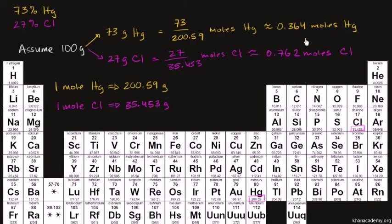So what's going to be the ratio of mercury to chlorine? Or I guess we could say since there's more chlorine, chlorine to mercury. Remember, this is just a number. When I say 0.762 moles, this is just 0.762 times Avogadro's number of chlorine atoms. This is 0.364 times Avogadro's number of mercury atoms. And so we can literally think of this as the ratio. What's the ratio of chlorine to mercury?